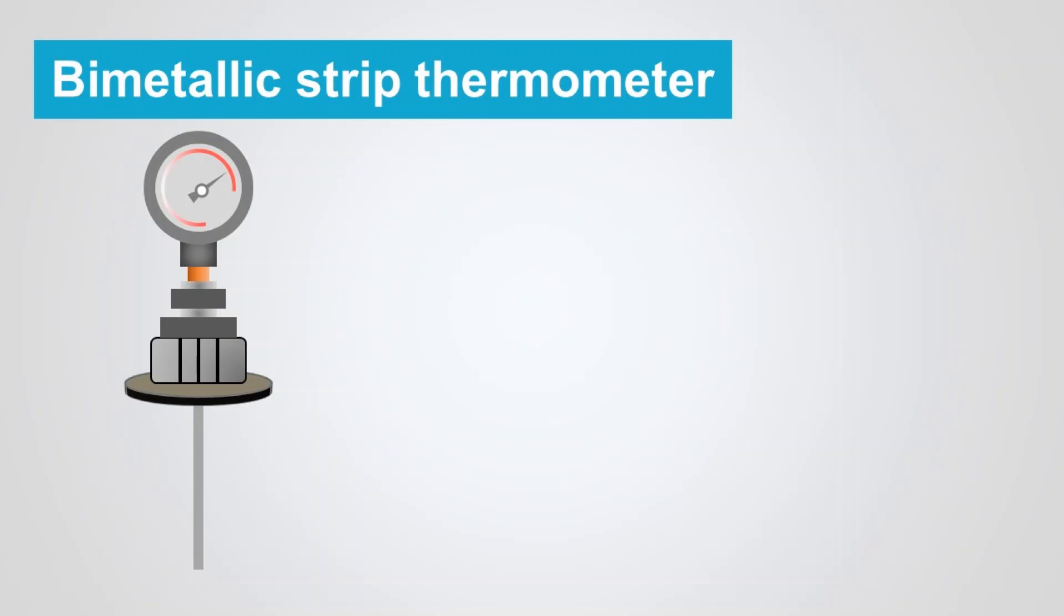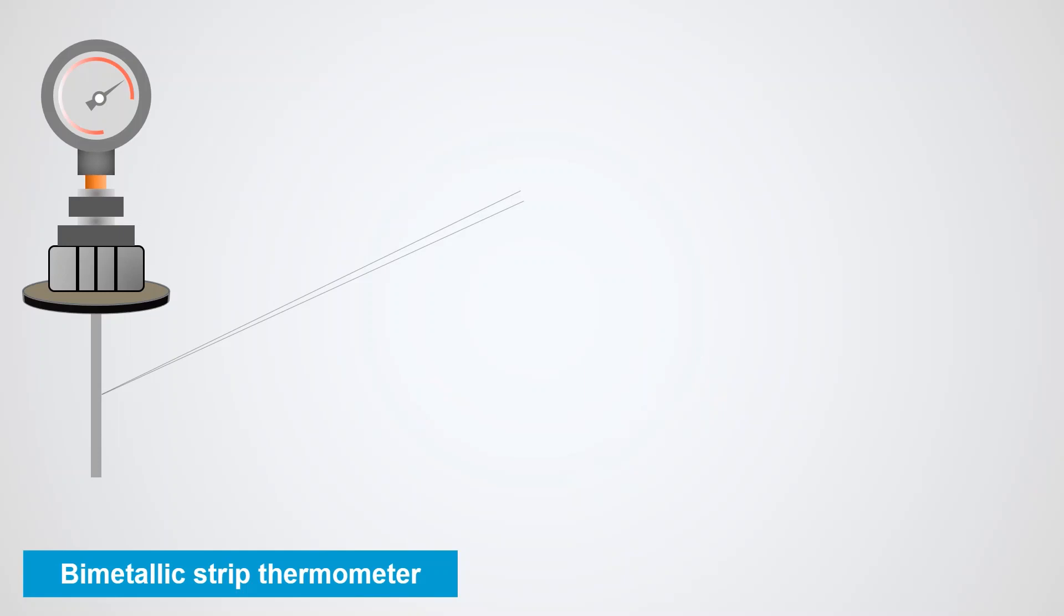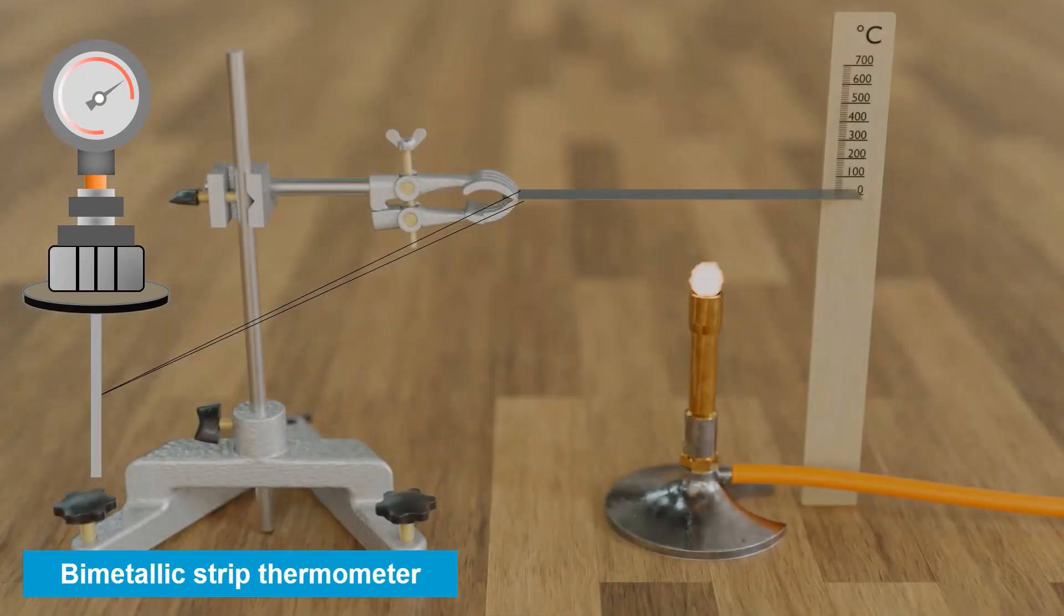A bimetallic strip is a very widely used method of temperature measurement. This method is based on the principle of thermal expansion of solids when there is a change in temperature. Bimetallic strip, as the name implies, consists of two metal strips with different degrees of thermal expansion firmly bonded together. When the strip is subjected to a temperature higher than the bonding temperature, the metal strip deforms due to the different degrees of expansion in one direction. When subjected to a temperature lower than the bonding temperature, it bends in the other direction. The deformation is a measure of the temperature and can be read off a calibrated scale.